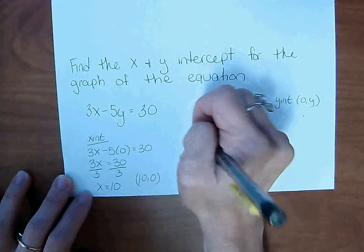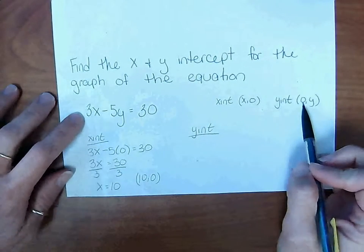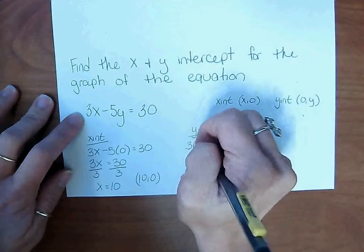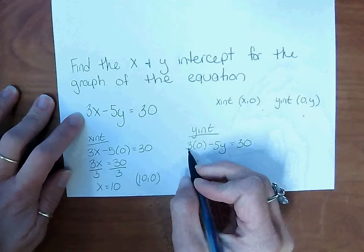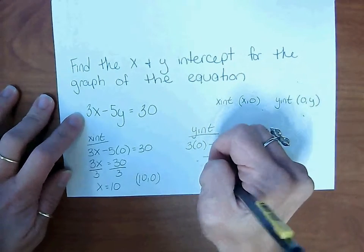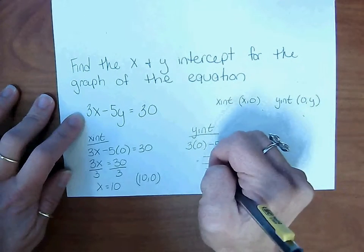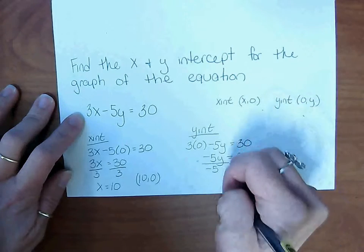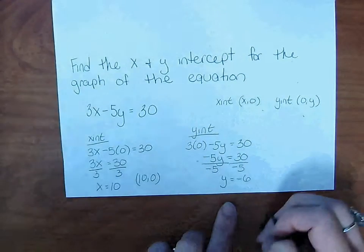Y-intercept. This time, we're going to plug in a 0 where we see x. So 3 times 0 minus 5y equals 30. 3 times 0 is 0. Negative 5y equals 30. Solve for y. Divide by negative 5 on both sides. y is negative 6. So the ordered pair would be 0, negative 6.